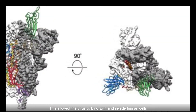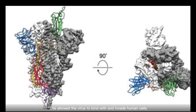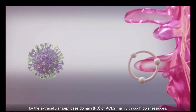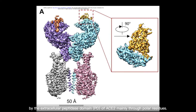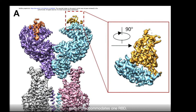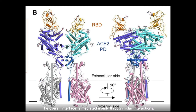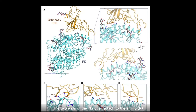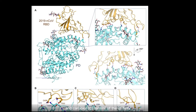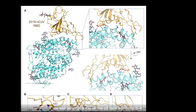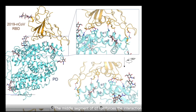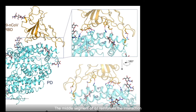This allows the virus to bind with and invade human cells by interacting with ACE2. The RBD of SARS-CoV-2 is recognized by the extracellular peptidase domain (PD) of ACE2, mainly through polar residues. Each PD accommodates one RBD. The overall interface is mediated mainly through polar interactions. The contact can be divided into three clusters: the two ends of the bridge attached to the amino and carboxyl C-termini of the alpha-1 helix, as well as small areas on the alpha-2 helix and loop 3-2-4. The middle segment of alpha-1 reinforces the interaction by engaging two polar residues.